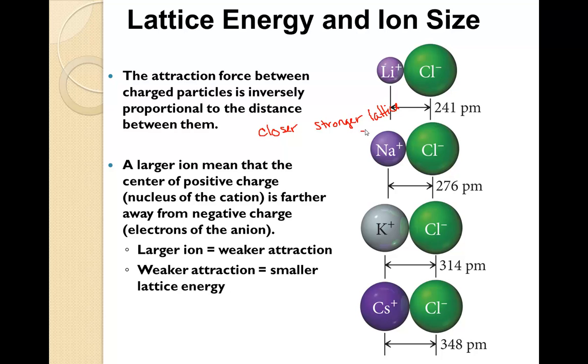So what this statement is saying here is as the distance, as the length between them goes down, the energy will go up. The energy will increase. The larger ion means that the center of the positive charge, which is the nucleus of the cation, is farther away from the negative charge, the electrons of the anion. The larger ion means that there's a weaker attraction because they're further apart. The weaker attraction means that there's a smaller lattice energy.